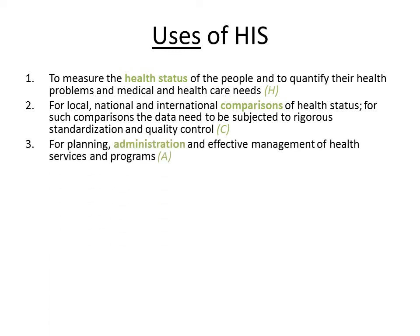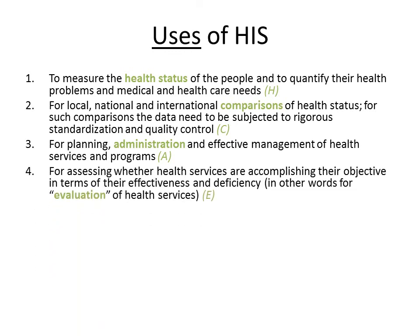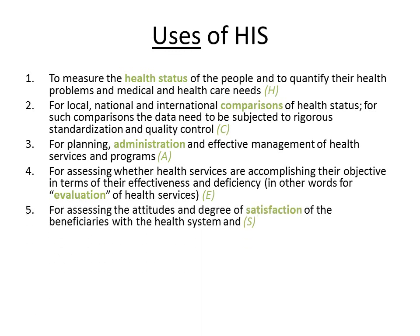Third, health information system is used for planning health services — this requires data on the health status of the people and effective management of health services, monitoring that the OPD is serving the expected number of people every day and tracking cure rates. Fourth, it is used for evaluation of health services — periodic evaluation to assess whether health services are accomplishing their objectives and for detecting any deficiencies. Fifth, for assessing attitudes and degree of satisfaction of the beneficiaries. Finally, for research into particular problems of health and disease, utilizing data routinely collected by the health information system.